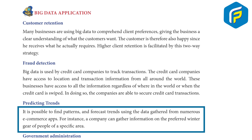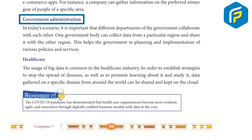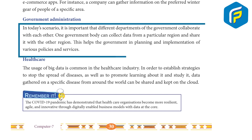Predicting trends: it is possible to find patterns and forecast trends using data gathered from numerous e-commerce apps. For instance, a company can gather information on the preferred winter gear of people in a specific area. Government administration: it is important that different departments of the government collaborate with each other. One government body can collect data from a particular region and share it with another, helping in planning and implementation of various policies and services.